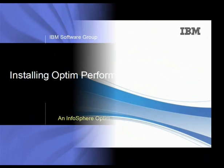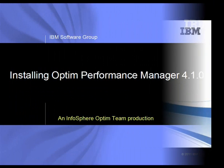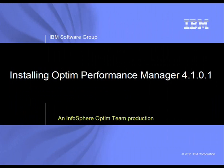This is the first part of the two-part video demo where we will learn about IBM Optum Performance Manager, version 4.1.0.1 packaging and how to install the product. Optum Performance Manager is a performance analysis and tuning tool for managing DB2 systems by using a web interface.